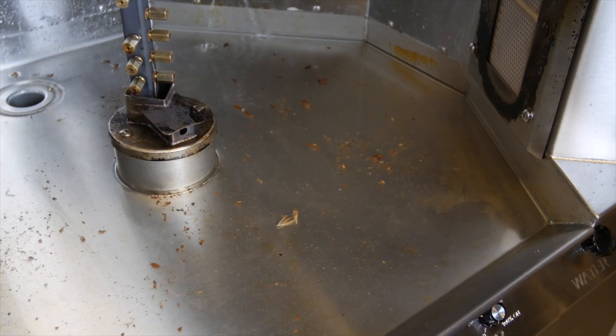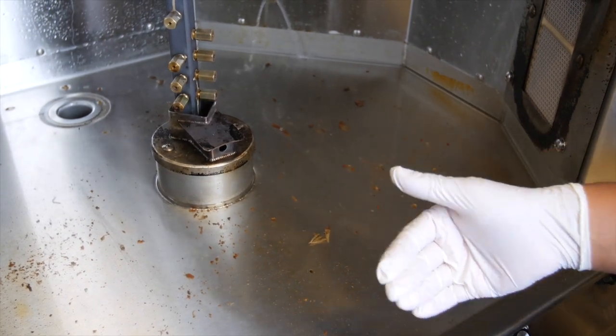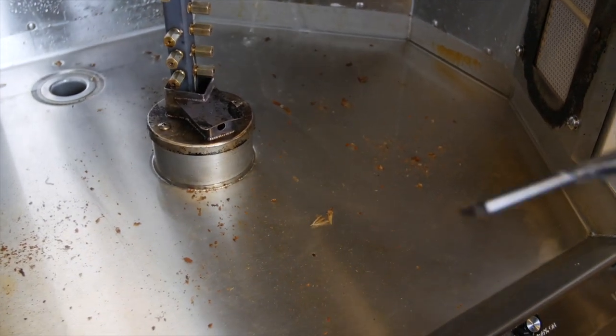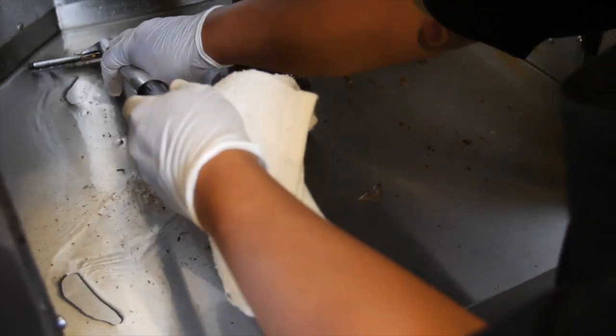If you find that the rotisserie is not properly leveled, you might find that the water wants to come towards the front of the chamber. Having a simple squeegee can help push water back towards the drain.